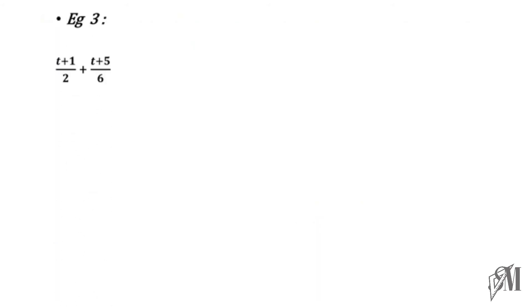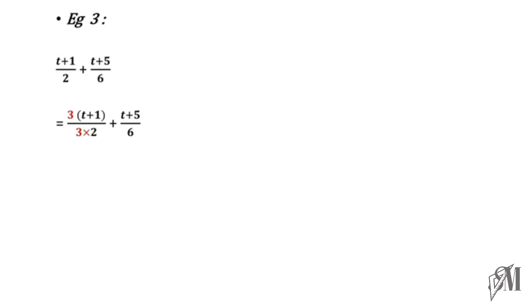The third example: (t + 1) over 2 plus (t + 5) over 6. The numerators are algebraic expressions. Since 2 multiplied by 3 gives 6, we multiply the first fraction by 3. When multiplying an expression by any term, bracket it to avoid mistakes. So 3 into (t + 1) gives 3t + 3, and we write the remaining fraction as it is over 6. Adding gives 4t plus 8 over 6.